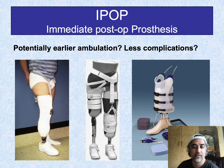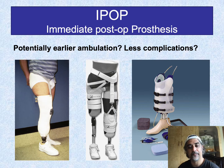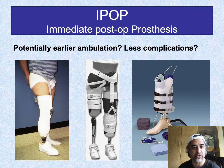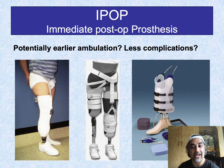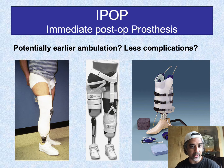The immediate post-operative prosthesis (IPOP) is applied during or immediately after surgery to potentially get the patient ambulating earlier. Facilities that have published research with it have shown possibly fewer complications and earlier ambulation. However, the surgeon, prosthetist, and rehab team all need to be working interdisciplinarily to monitor wound and patient progress. This is not a management strategy typically accepted everywhere, but it's something you should know about.